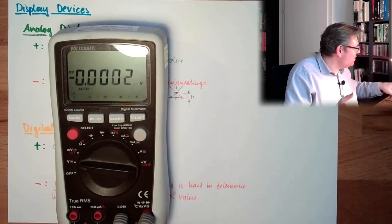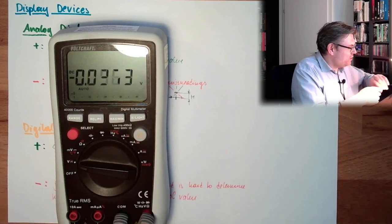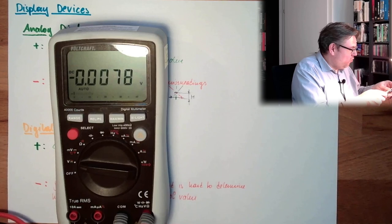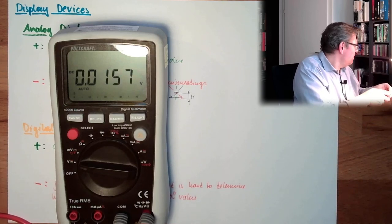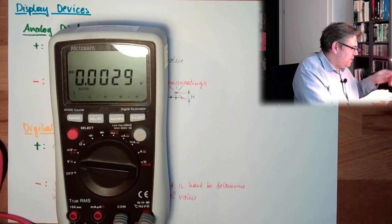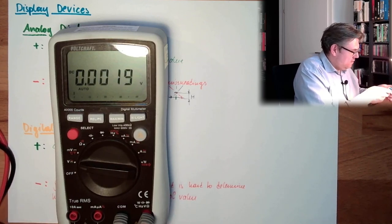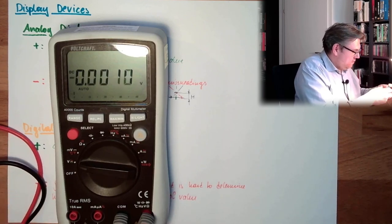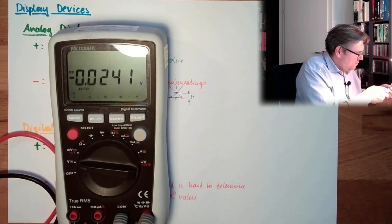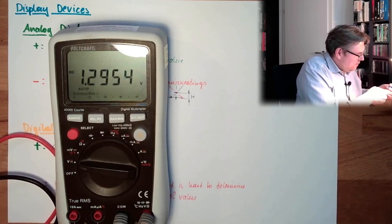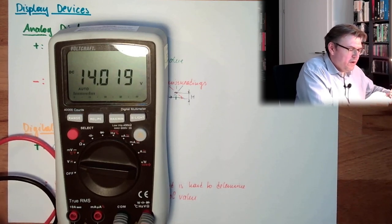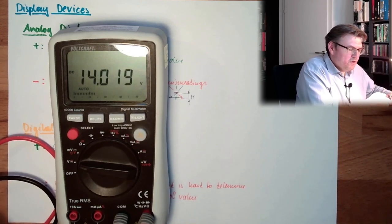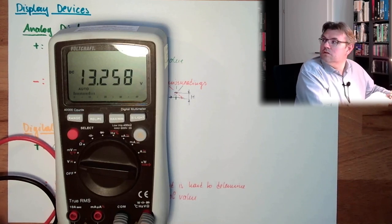So here we see, is this a trend or not? I will simply start to measure now here some voltage. Plug it in. Turn it on, turn it on, then plug it in. And then we will see. Okay, now it is a stable reading. 14.019 volts. It was stable.